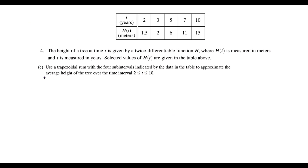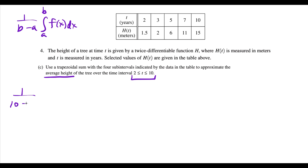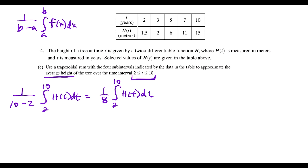For part C, we want to find the average height. We have to know the average function value formula: one over b minus a times the integral from a to b of the function. Applying it here, we get one over ten minus two times the integral from two to ten of h of t dt, which equals one eighth times the integral from two to ten of h of t dt.